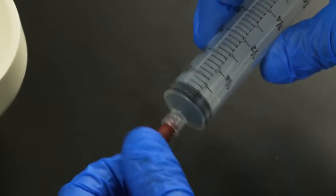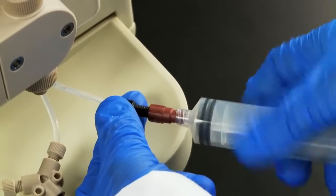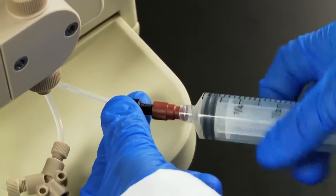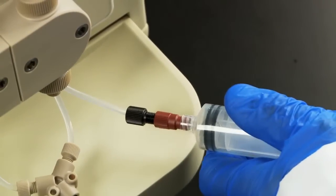Attach the quarter-twenty-eight lure adapter onto a 30 mil syringe and then join this assembly to the priming line. Withdraw the syringe plunger until washing solution appears in the syringe.